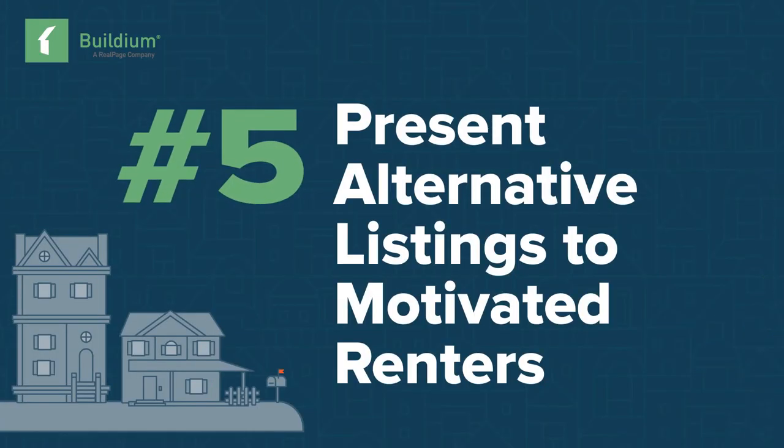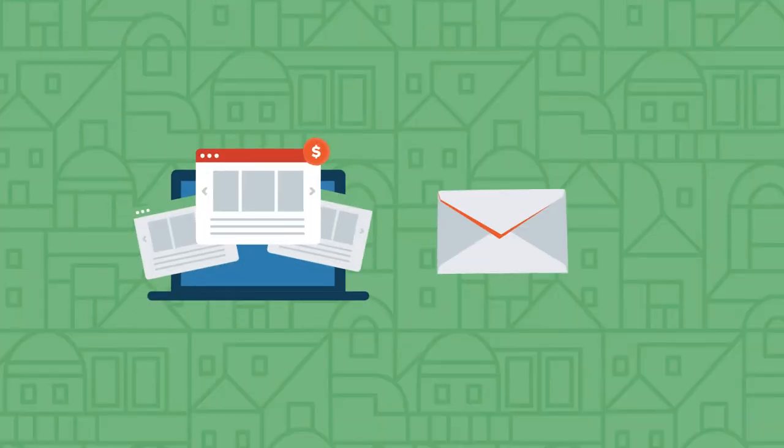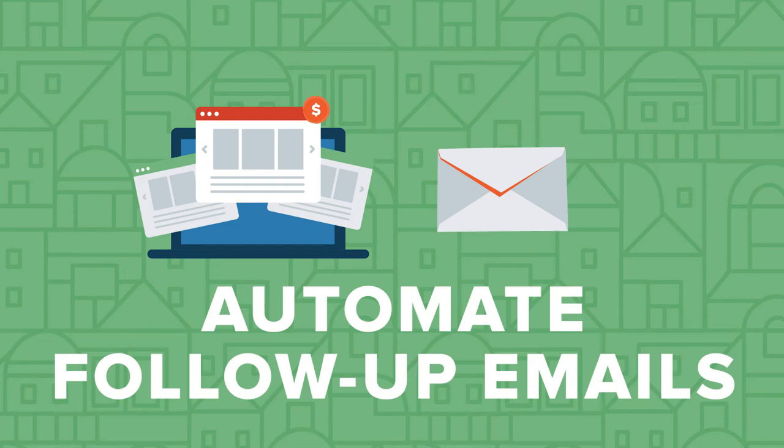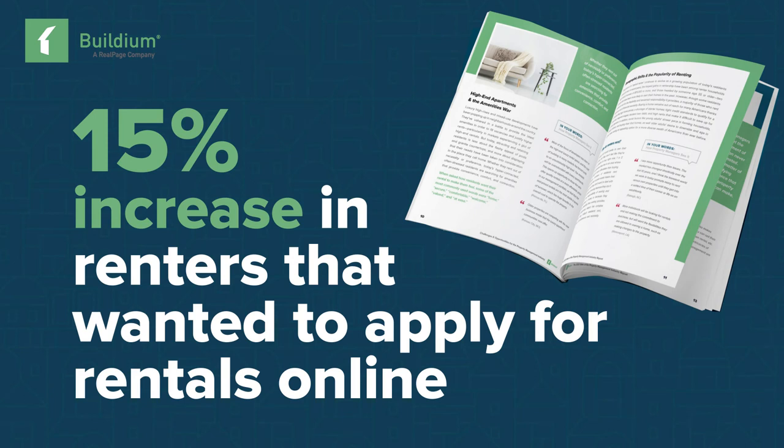Number five: present alternative listings to motivated renters. Once you have an interested renter in hand, make sure you suggest other rentals that you manage if their first choice doesn't work out. Be sure to highlight the listings on your website by automating your follow-up emails as well. From the State of the Property Management Industry report, we found that the percentage of renters who wanted to apply for rentals online increased 15% from 2018 to 2019. Make sure that your rental application process is smooth so you don't miss out.